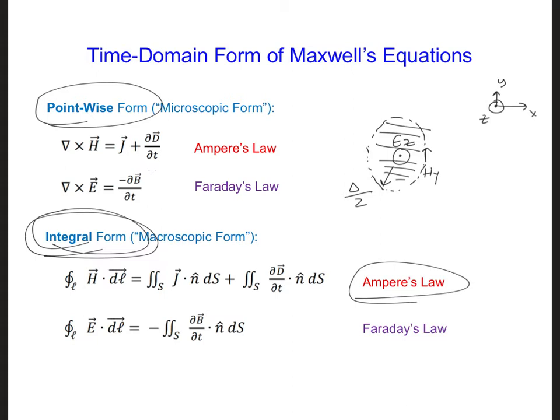Starting on the right side of this equation, what this equation says in words is if we integrate the J current densities and the time-changing D field flux through the surface S, so this would be S, the shaded circle area.